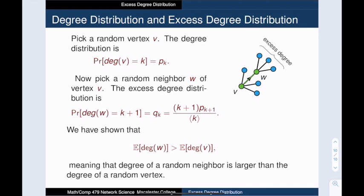The notion of excess degree will play an important role when we study epidemics on networks. The reason is that the disease will be passed along an edge, so when the disease tries to infect someone new, it must travel along one of the excess edges of an infected vertex. We will explore the effects of network structure on the spread of disease in our next video.